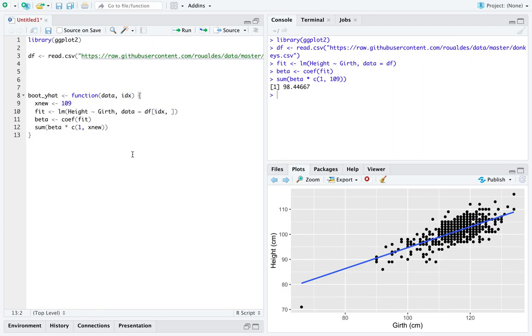So this is the code we'd have to write up for the bootstrap predictions of y hats, that is, estimates of the response variable based on a specific value of the explanatory variable.